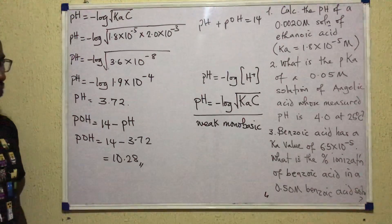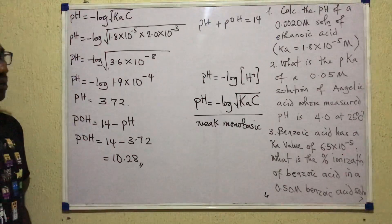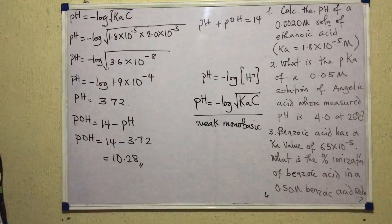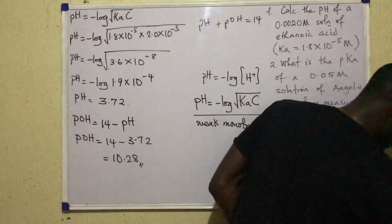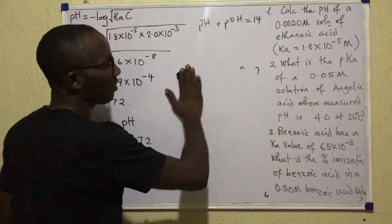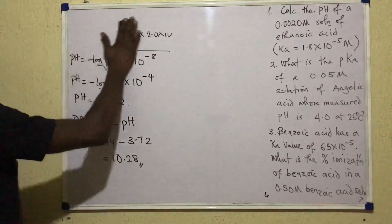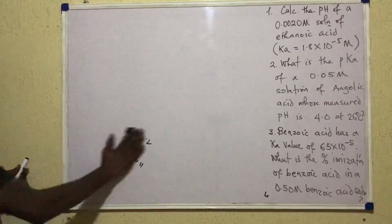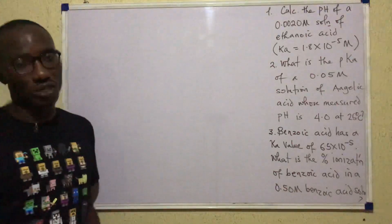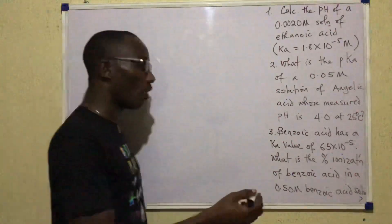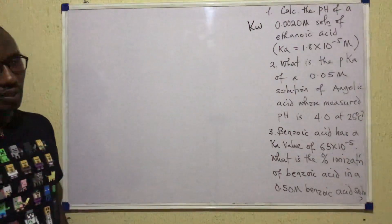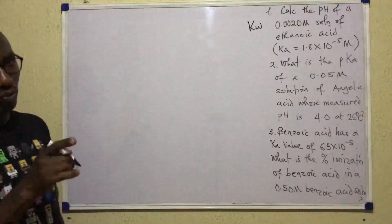There's a second example to solve: what is the pKa of a 0.05 molar solution of angelic acid whose measured pH is 4.0 at room temperature (25°C)? The temperature is noted because pH varies with temperature — the pH at 25°C differs from that at 40°C. This is because KW, the water dissociation constant, varies with temperature, and as KW varies, pH varies too.